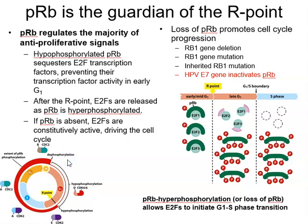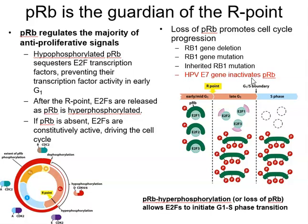The RB1 gene is frequently inactivated in cancer — we often see RB1 gene deletion of both copies, or deletion of one copy combined with a missense or frameshift mutation in the other. If patients inherit one defective copy of RB1, the other homologue in tumours is either deleted, mutated, or inactivated by some other mechanism. Crucially, HPV's E7 gene product specifically inactivates PRB to promote proliferation of virally infected cells.